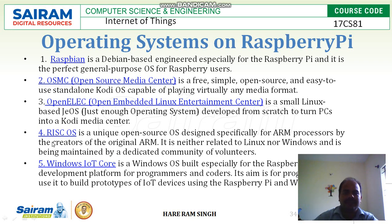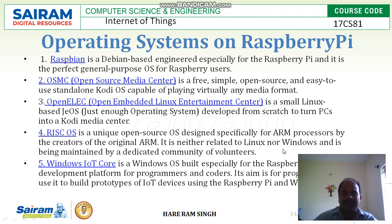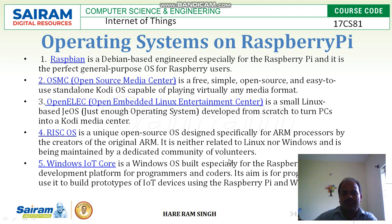The fourth operating system that can run on Raspberry Pi is RISC OS. It is a unique open source operating system used specially for ARM processors, created by the original ARM designers. It is neither related to Linux nor Windows, and is maintained by a dedicated community of volunteers.